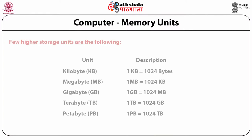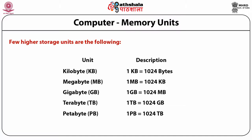Memory units represent how information is stored and measured. Information is stored in terms of bits and bytes — a one or zero is called a bit, that is, binary digit. One kilobyte (KB) is 1024 bytes; one megabyte (MB) is 1024 kilobytes; one gigabyte (GB) is 1024 MB; one terabyte is 1024 gigabytes; and one petabyte is 1024 terabytes.